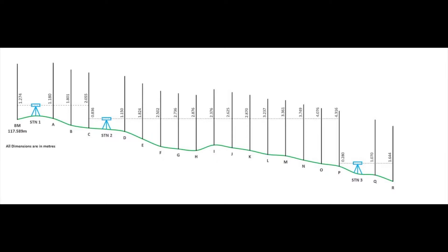In this example, we've had to change the position of the level from station one to station two, and then finally from station two to station three. At each of the points, the level value is recorded. Starting from the left-hand side, our first level value is 1.274, and at our first point, we know that the benchmark, or BM, is a value of 117.589. All dimensions being in meters.